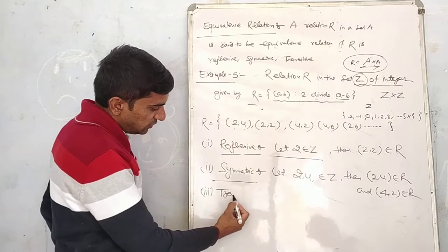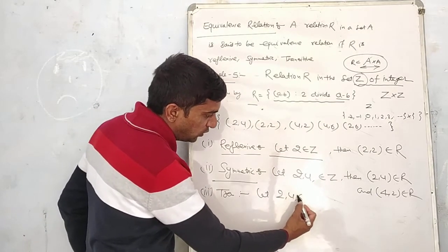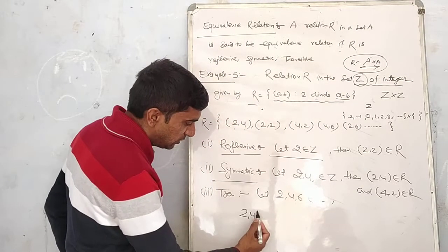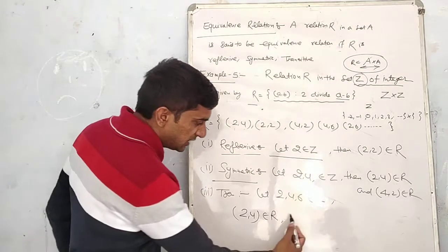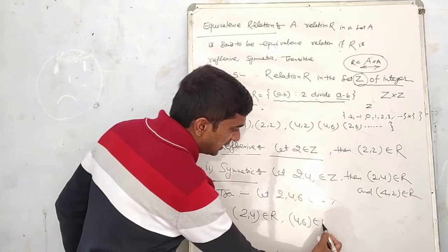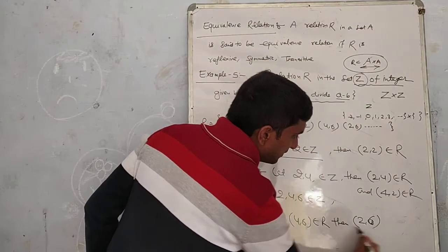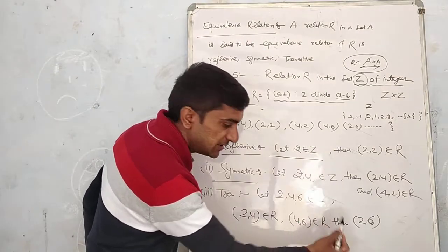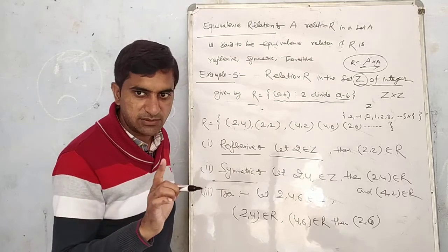Transitive. In terms of transitive, you have (2,4), (4,6) belongs to the relation. If it is like this, then what should happen? (2,6) must belong. A1,A2 belongs and A2,A3 belongs, then A1,A3 must belong. You can understand it.